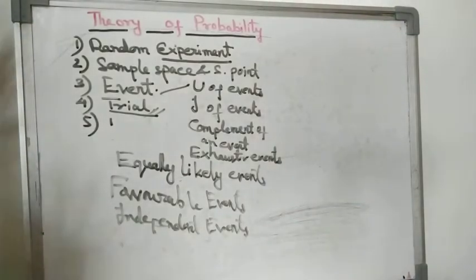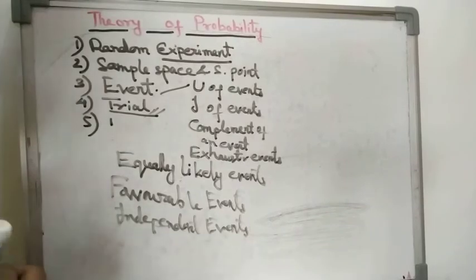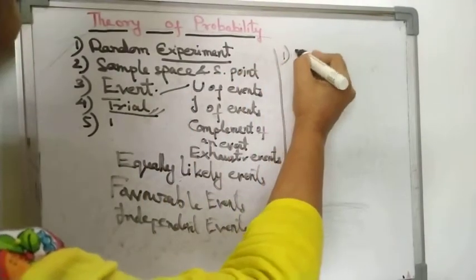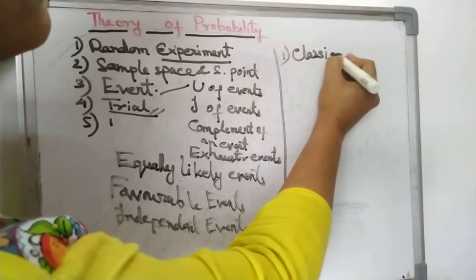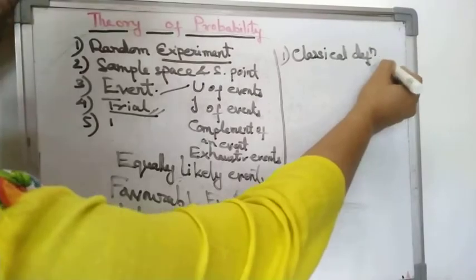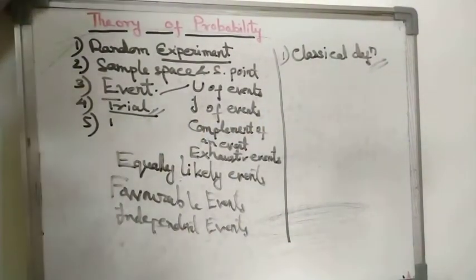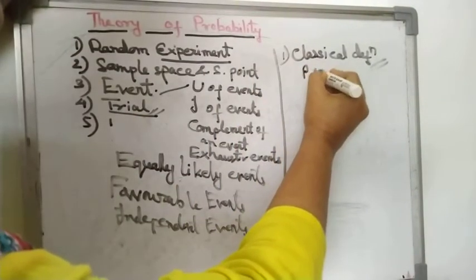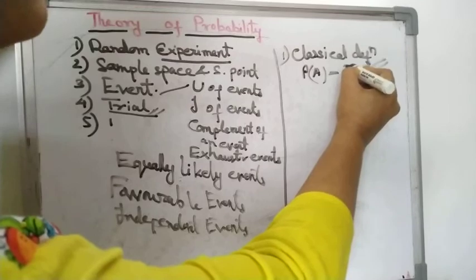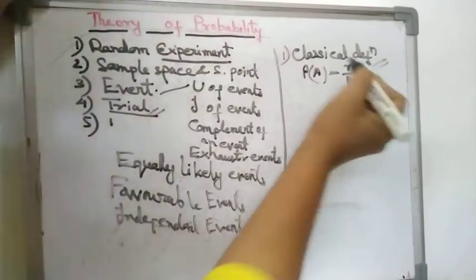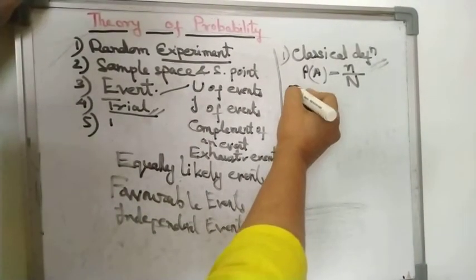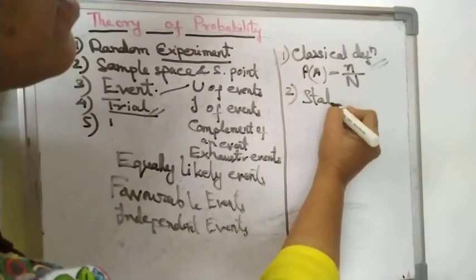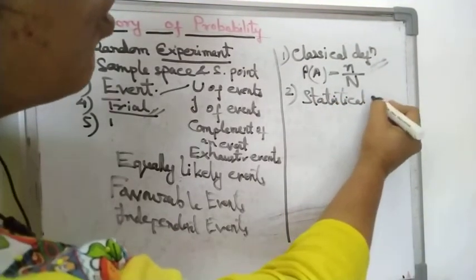These are the topics we are going to study in this chapter. We will also cover different definitions of probability. Earlier we studied the classical definition of probability, which is also called the mathematical definition of probability — where the probability of an event is defined as the number of cases favorable to the event divided by the total number of cases. The second definition is the statistical or empirical definition of probability.